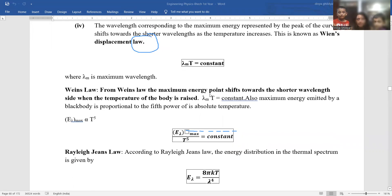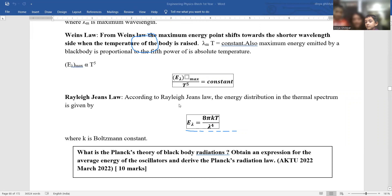From Wien's law, the wavelength corresponding to maximum energy, represented by the peak of the curve, shifts towards shorter wavelength as temperature increases. This is Wien's displacement law: λ_m × T = constant, where λ_m corresponds to maximum wavelength and T to temperature in Kelvin. Rayleigh-Jean's law says energy distribution in thermal spectrum is E_λ = 8πkT/λ^4, where λ is wavelength and k is Boltzmann constant. Please remember, not much detail is required - just remember the laws, their statements, and mathematical expressions.